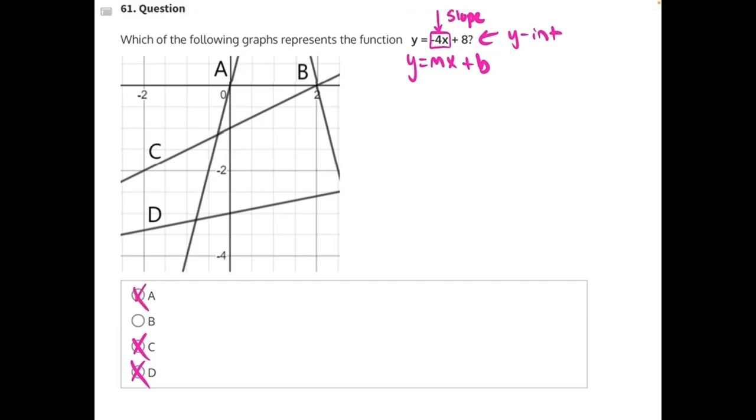The only graph with a negative slope descending from left to right is answer choice B, making that our correct answer.